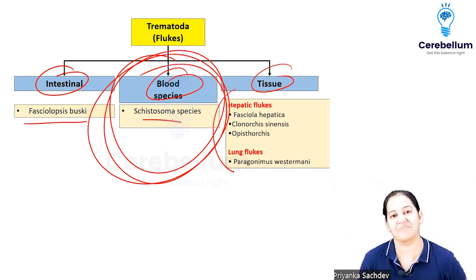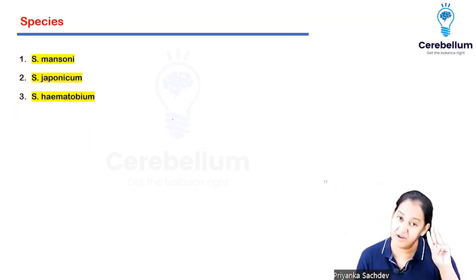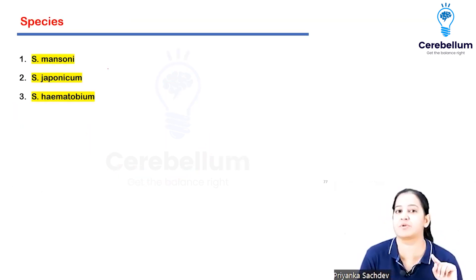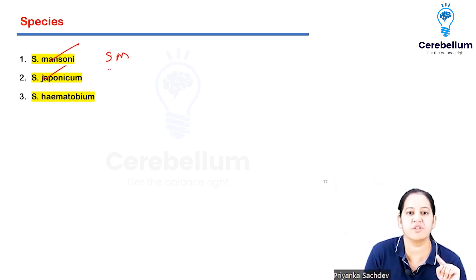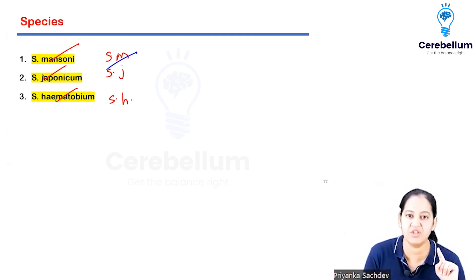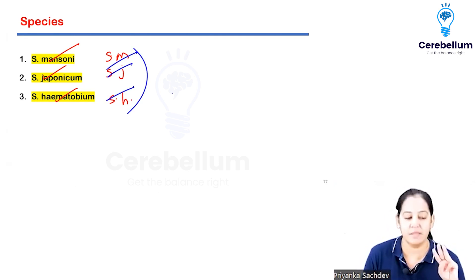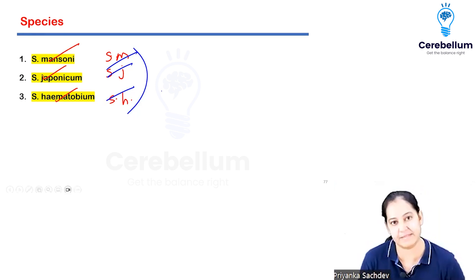That is Schistosoma. There are three types of Schistosoma in our syllabus: Schistosoma mansoni, Schistosoma japonicum, and Schistosoma haematobium.